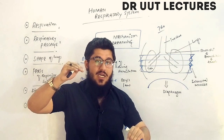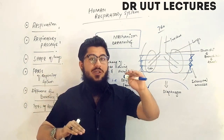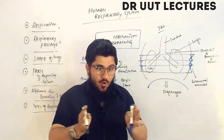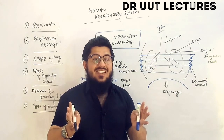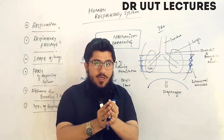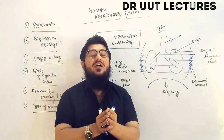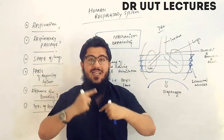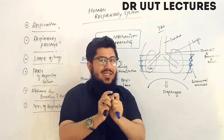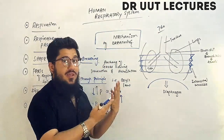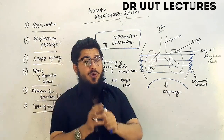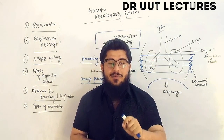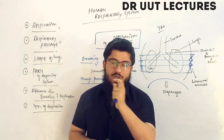In summary: in the lungs, when we increase the volume the pressure decreases, and when we decrease the volume the pressure increases — following Boyle's Law — which is how we inhale and exhale. That's everything regarding the mechanism of breathing. If you have any questions, feel free to ask in the comment box. Thank you for watching.